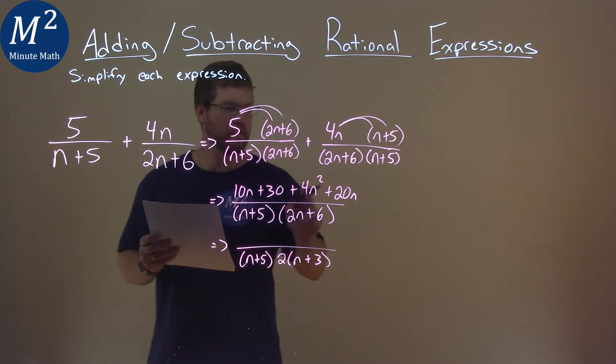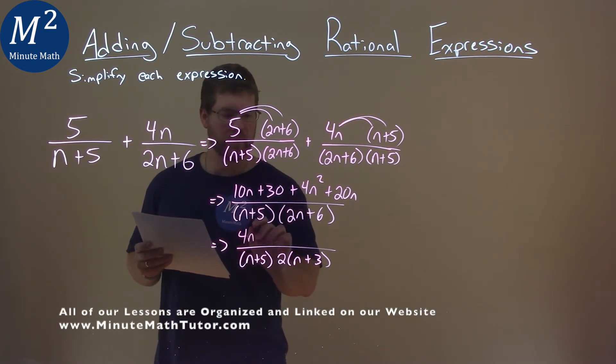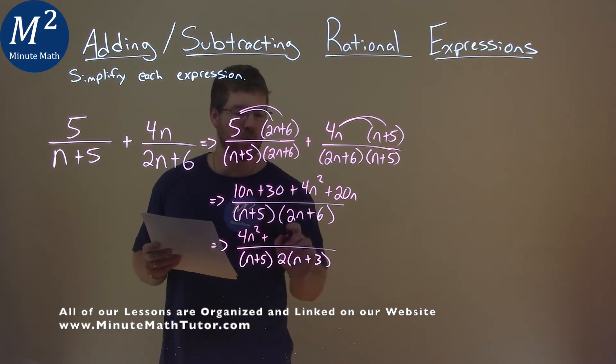The numerator, we can rearrange this, we have 4n squared. Combine our like terms, plus 10n plus 20n is 30n, and we have a 30 there as well. So make sure just bring everything down here.